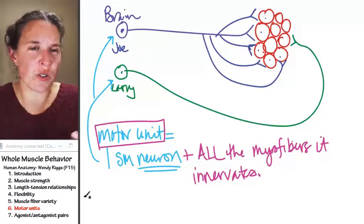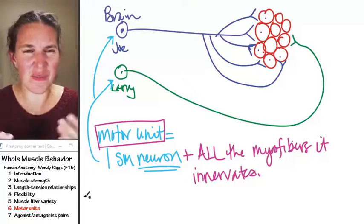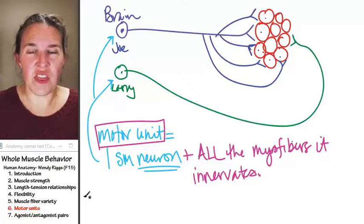In your thigh muscle, you have one motor unit that is, you have one motor neuron that is controlling hundreds of muscle fibers.